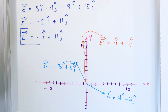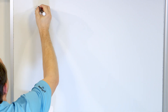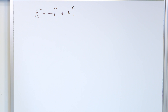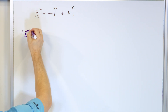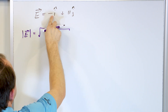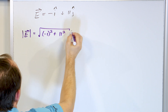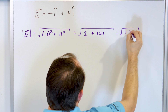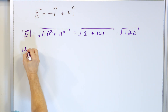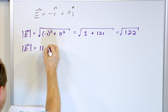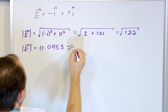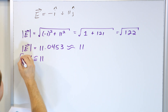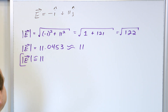For part C, we want to find the magnitude and angle of vector E, which is negative i plus 11j. The magnitude of E equals the square root of the x-component squared plus the y-component squared: the square root of negative 1 squared plus 11 squared. Negative 1 squared is 1, and 11 squared is 121, giving us 122 under the square root. The magnitude works out to 11.0453, which for all practical purposes we can call approximately 11.